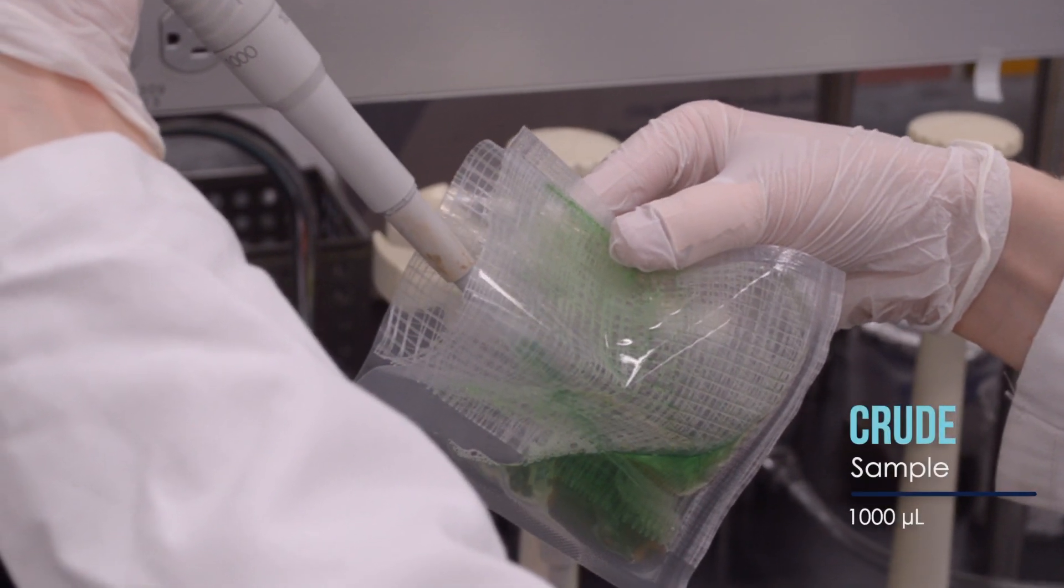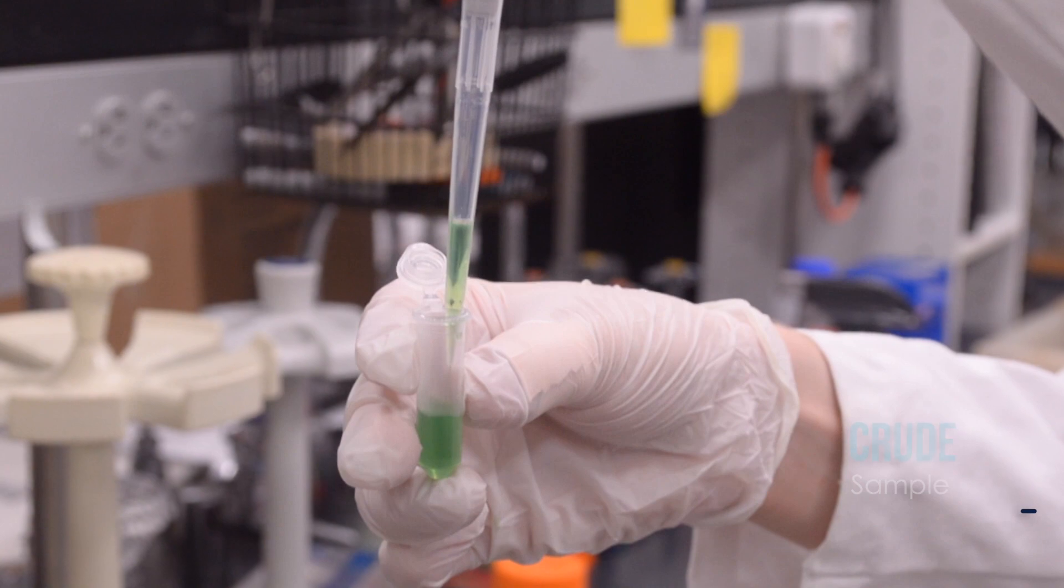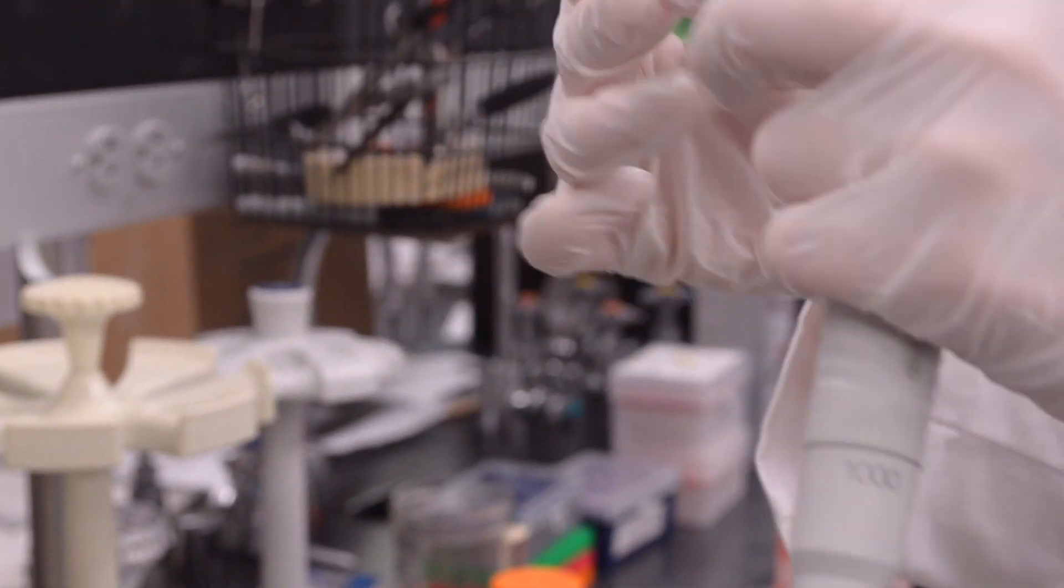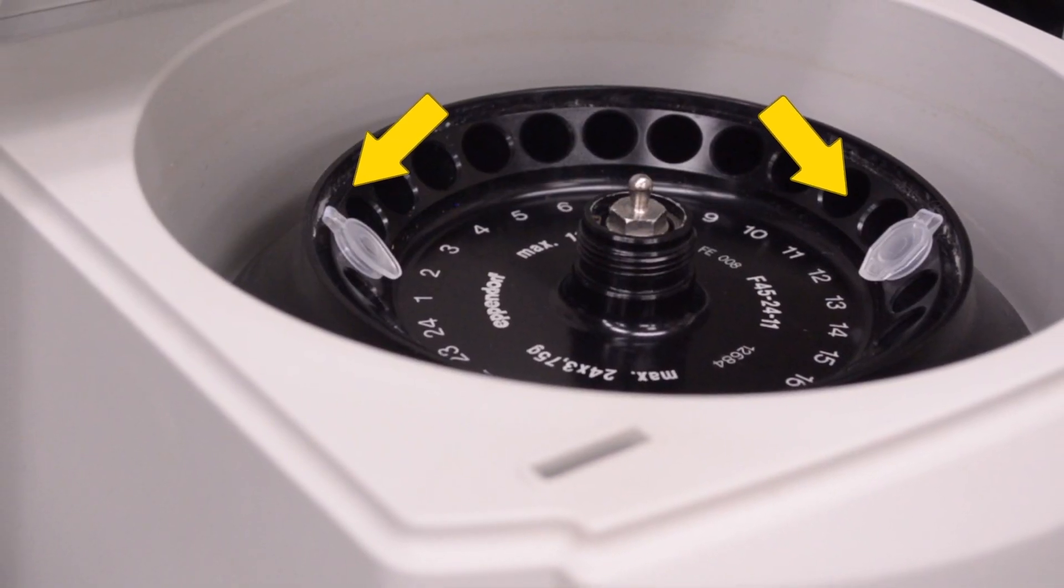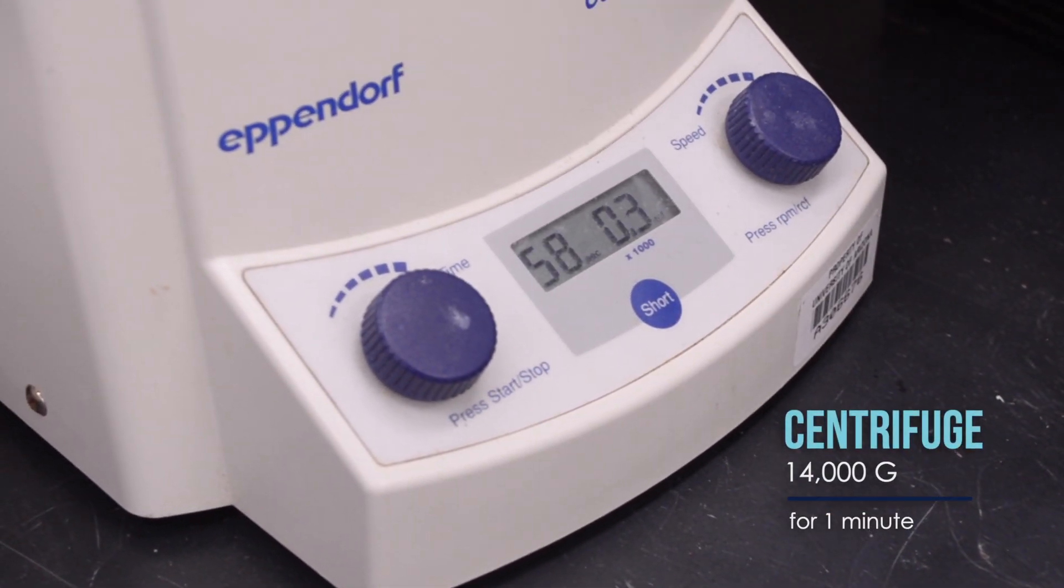For the LAMP DNA extraction, we're going to take 1,000 microliters of the crude extraction and put it into a microcentrifuge tube. Make sure to balance the centrifuge with another equally weighted tube and centrifuge at 14,000 g for one minute.